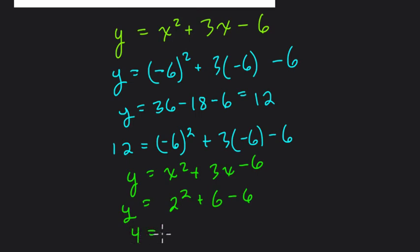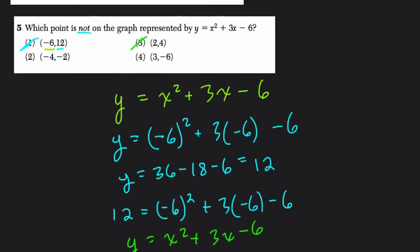Since our output is 4 and our input was 2, it balances the equation. These two sides are the same. They're balanced. It is on that function. Keep going.